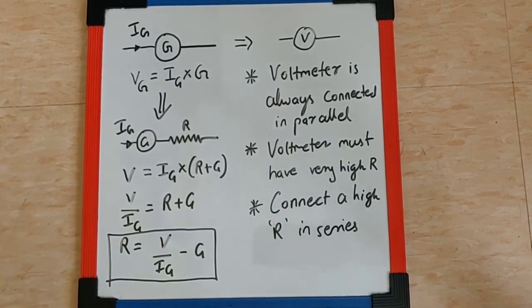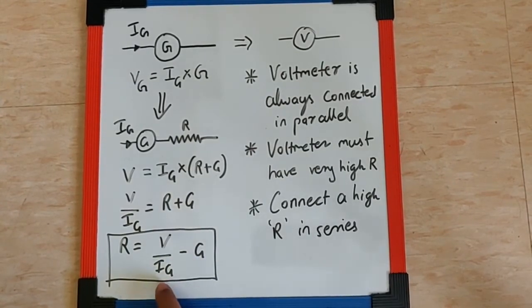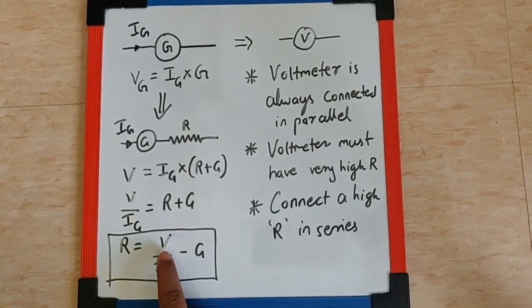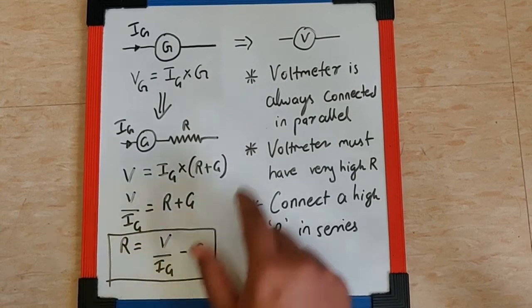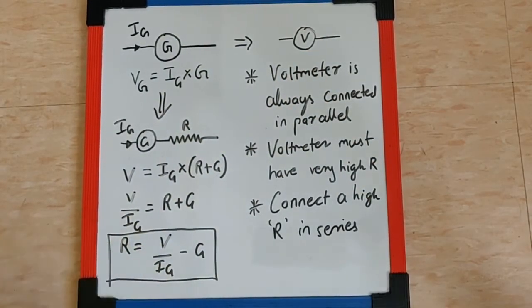So if we know what is the resistance of the galvanometer, what is the current measuring capacity of the galvanometer and what is the maximum voltage capacity we want to make for the voltmeter, then using this formula we can calculate what resistance is to be connected with the galvanometer in series.